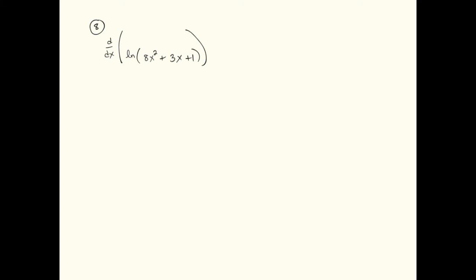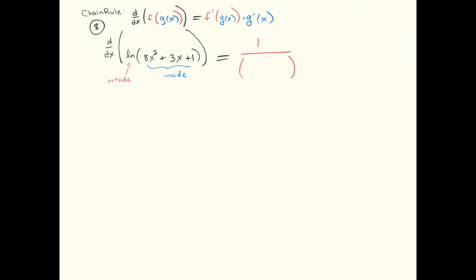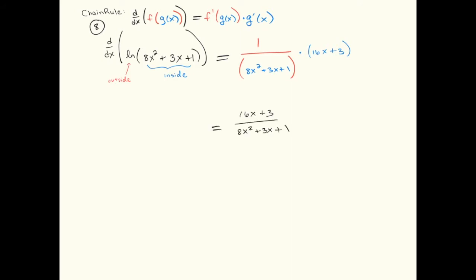Let's do another one — a legit chain rule problem. The outside or f part is the ln, and the inside part is this polynomial. The chain rule says the first thing we do is take the derivative of the outside part. The derivative of ln of u is 1 over u. Without the u notation, the derivative of ln of stuff is 1 over stuff — that's the f prime part of the chain rule. The g of x, or the u, should just be copied down, and then I multiply times the derivative of the inside function, which here is 16x plus 3. And that's my final answer.